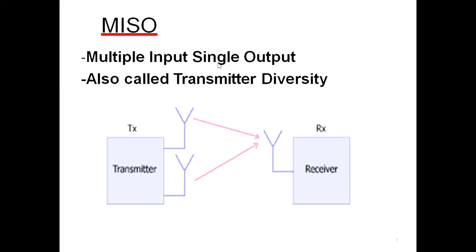We determine whether a system is multiple or single based on the number of antennas at the transmitter and receiver. For MISO, we connect multiple antennas at the transmitter but only one antenna at the receiver.